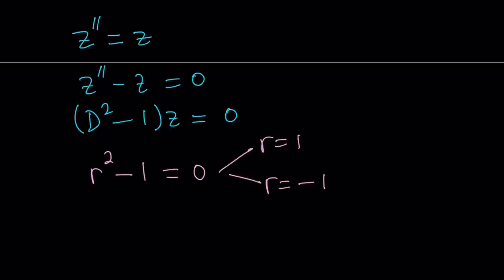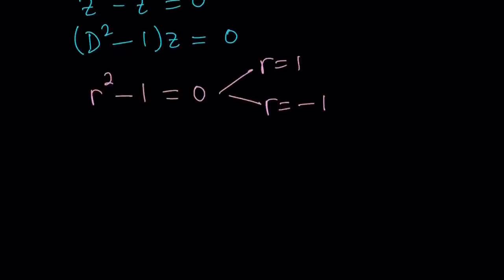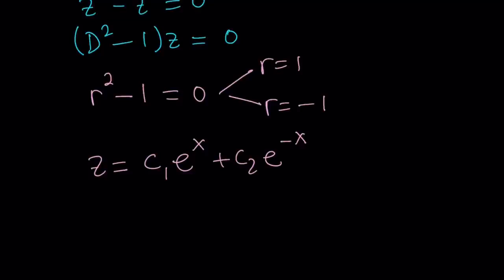With the given roots, since they are real, we can write the solution using constants as coefficients: c1 e to the power x plus c2 e to the power negative x. The x and negative x come from the roots 1 and negative 1. In general, if the roots are r1 and r2 and they are real, you write the solution as c1 e to the power r1 x plus c2 e to the power r2 x.